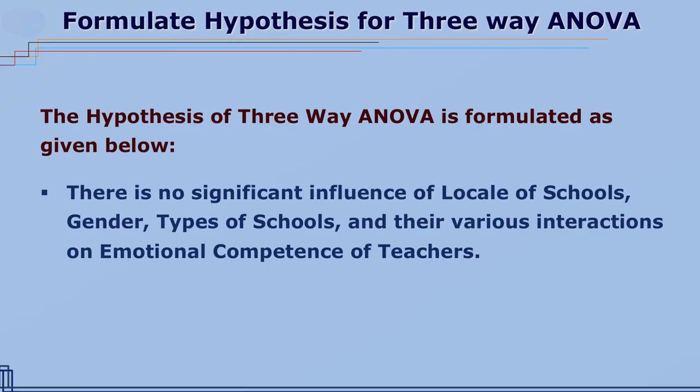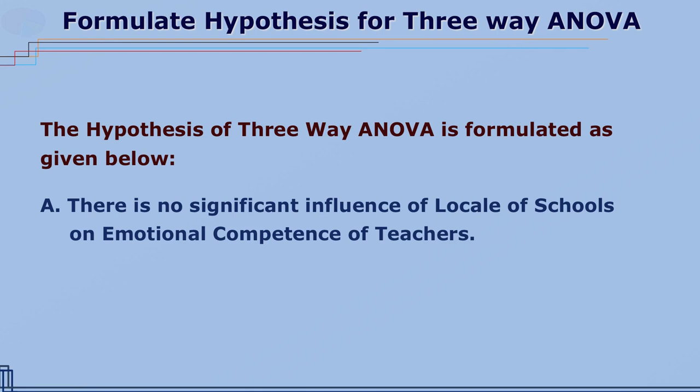How to formulate hypotheses? The hypothesis can be formulated in the null form as: there is no significant influence of locale of schools, gender, types of schools, and their various interactions on emotional competence of teachers. If you have written seven objectives, then you must formulate hypotheses in null form as follows. Hypothesis A: there is no significant influence of locale of schools on emotional competence of teachers.